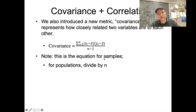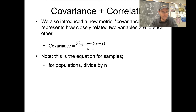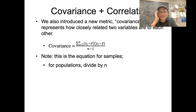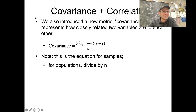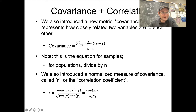This is the equation for samples because we use n minus one as the degrees of freedom on the bottom. For populations, we divide by n instead, because you assume you have data for every single relevant item. For example, if we measured the height and F0 of every living person on Earth, we wouldn't need to estimate any parameters — we'd know the entire population. In practice, that never happens, so we work with samples.